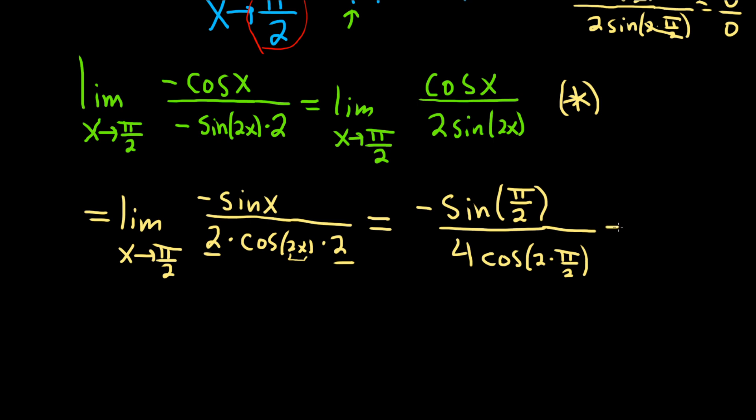Beautiful stuff. Sine of pi over 2 is 1, so this is negative 1 over... These cancel, you get cosine of pi which is negative 1. So you have 4 times negative 1. So we get 1 over 4.